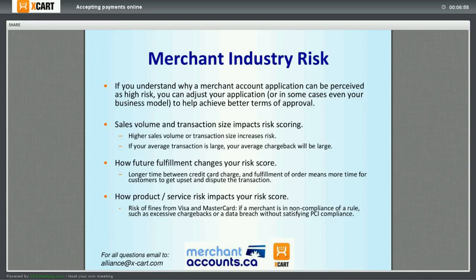The first major risk factor is transaction size. A merchant selling coloring books with an average ticket of $20 has only $20 of risk if something goes wrong. Another merchant that sells Rolexes with an average ticket of $20,000 has a lot more money on the line in a dispute. Simply by virtue of how expensive the items you sell are, it will impact your risk score. More importantly than individual transaction size is the sales volume itself. A company processing $5,000 per month represents limited risk, whereas a company processing $1 billion per month is obviously a lot more at risk, and the underwriter will look into that file much more closely.